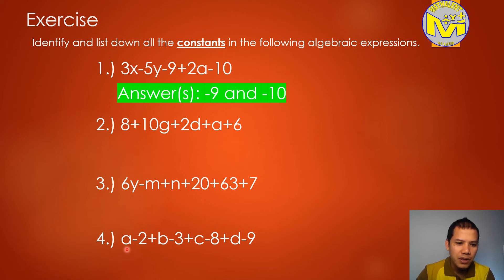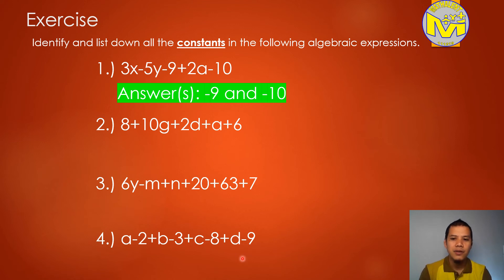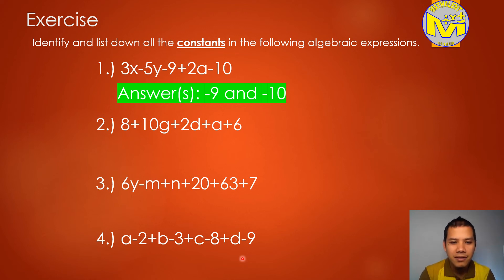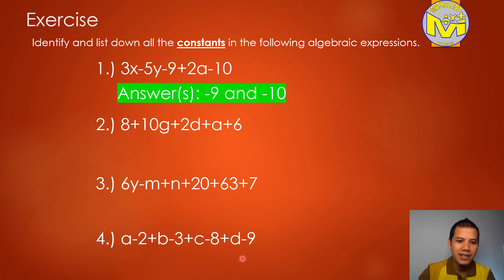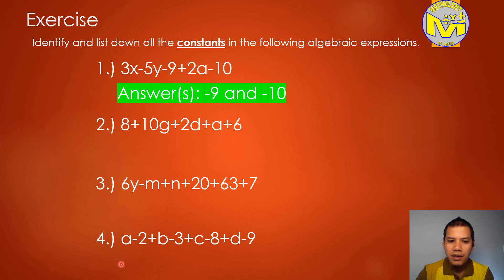In number 4, we have A minus 2 plus B minus 3 plus C minus 8 plus D minus 9. Identify the constants. I can count 1, 2, 3, and 4 — yes, we have 4. But I will not tell you. So you can write here or write on your paper or in your notebook. Now let's go to the next slide.